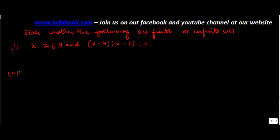Two: x such that x belongs to N and 4x minus 6 is equal to 0.